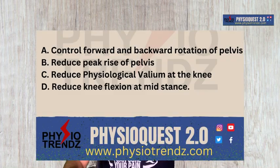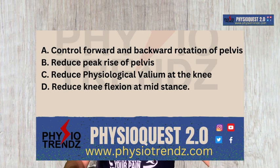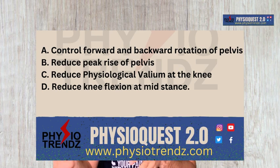Before going to the options, let me make it very clear that we have to focus on the frontal plane analysis. For that, only two options are suitable: option B, which is about reducing the peak rise of the pelvis, and option C, which is about genu valgum.